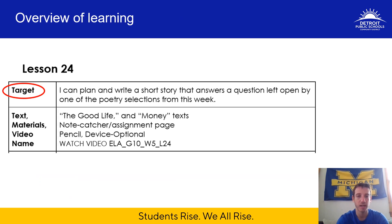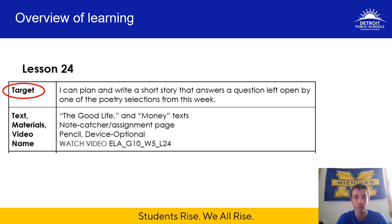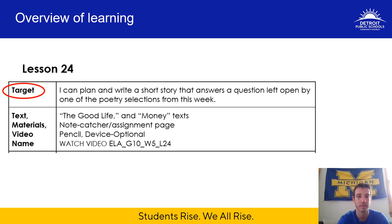The learning target for today is: I can plan and write a short story that answers a question left open by one of the poetry selections from this week. You're going to have a choice today to write a short story for either of the poems, The Good Life or Money. It's going to be a short story that answers a question that was left open or unanswered by the author — it's up to you to answer that question.